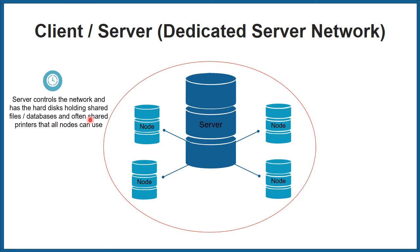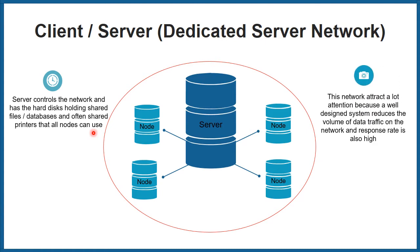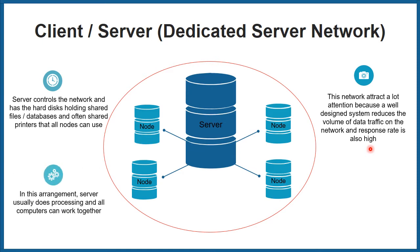Clients can access any sort of information from the server because of the availability of databases. This network attracts a lot of attention because a well-designed system reduces the volume of data traffic on the network and the response rate is also high. There is no data collision in this model, which is why it has great usage response. In this arrangement, the server usually does the processing and all computers can work together.